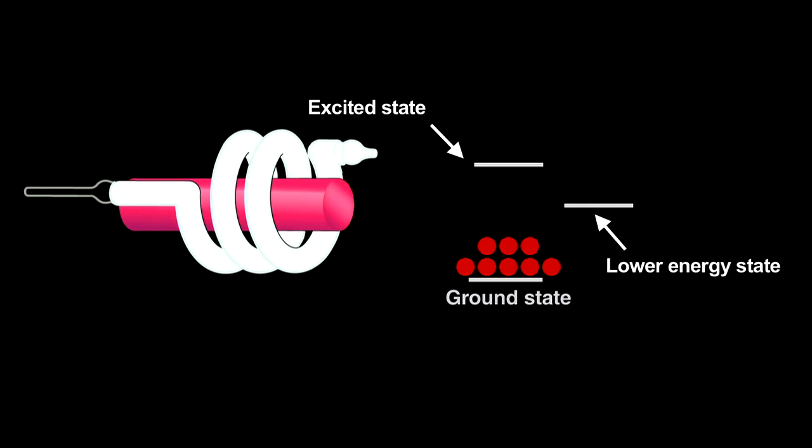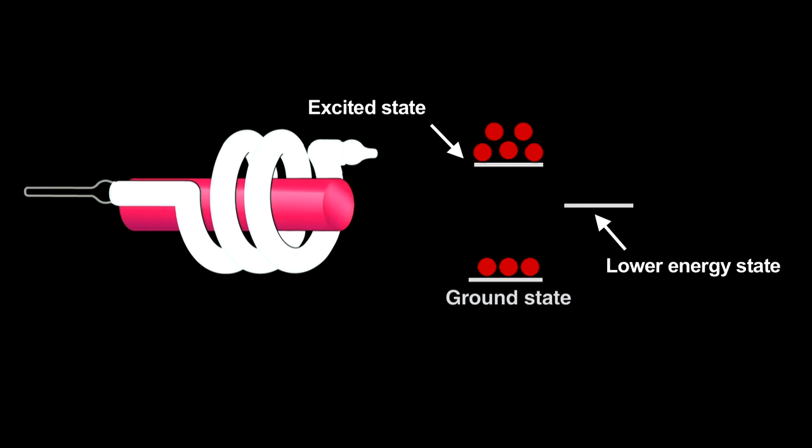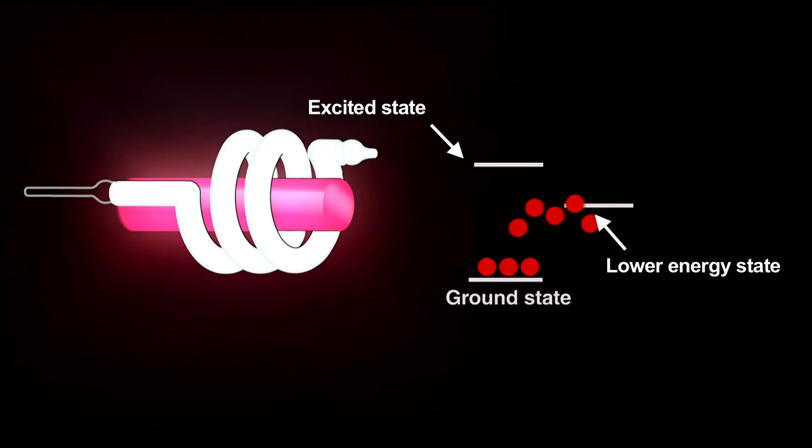To create a laser takes an extremely powerful lamp. In the ruby laser, repeated flashes, called pumping, make something amazing happen. They supply so much energy that a population inversion occurs. Here, more electrons in the energy level just above the ground state than in the ground state.